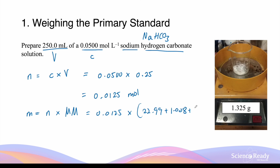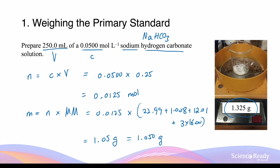Since we cannot measure moles on a balance, we convert moles to mass by multiplying by the molar mass of NaHCO₃: 0.0125 × (22.99 + 1.008 + 12.01 + 3 × 16.00) = 1.050 grams. The number of decimal places depends on the precision of your balance scale. If your scale allows three decimal places, you want 1.050 g of sodium hydrogen carbonate. The diagram shows 1.325 g, so you would use a spatula to remove some until reaching 1.050 g.